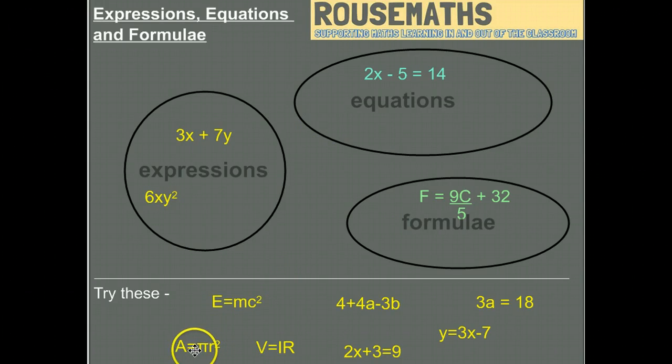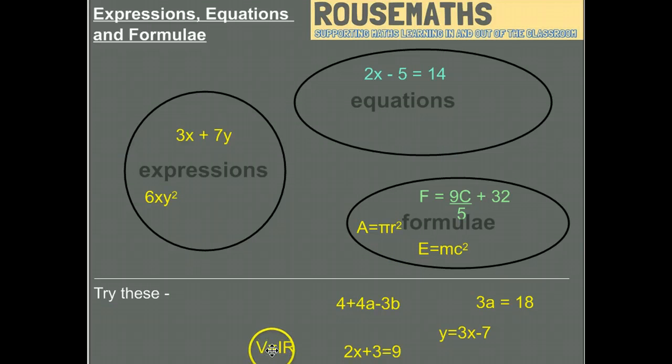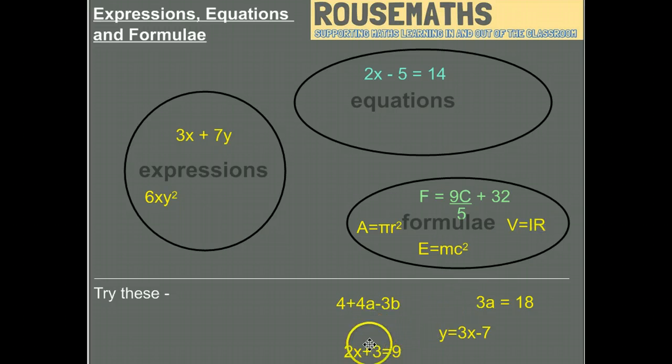This one is Einstein's formula of relativity. This is the relationship between voltage, current, and resistance—there's another formula. This one here is an equation because there's only one particular value of x that we can work out, so it allows us to work out a particular value, as does this one here.